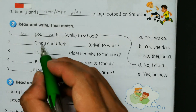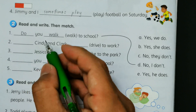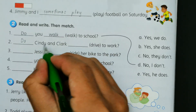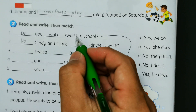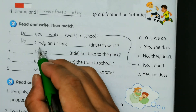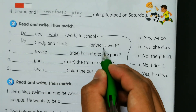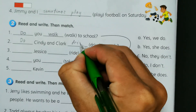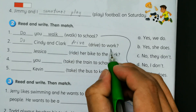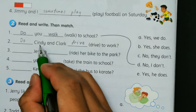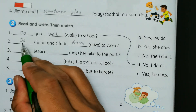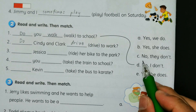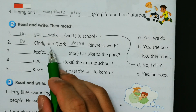Number two: Cindy and Clark — we use 'do' here because there are two people. Do Cindy and Clark drive to work? You need to find the matching answer.